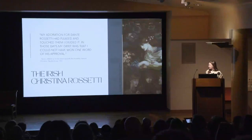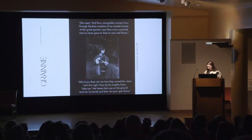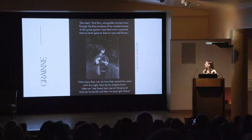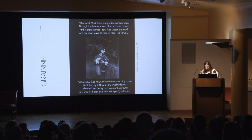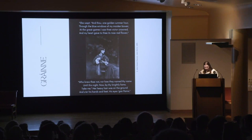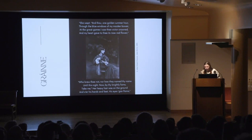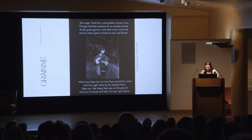Her second collection, Shamrocks, in which The Pursuit of Diarmuid and Gráinne is published, is moreover dedicated to William and Christina Rossetti, making the Rossettis an explicit frame of this text. However, it is Dante Gabriel's influence that is most felt in her engagement with Gaelic mythology. Rossetti's influence is apparent straight away in the physical depiction of Gráinne — one very immediate obvious reference in the second line: 'through the blue windows of my maiden bower' — a reference to the Blue Bower, perhaps.